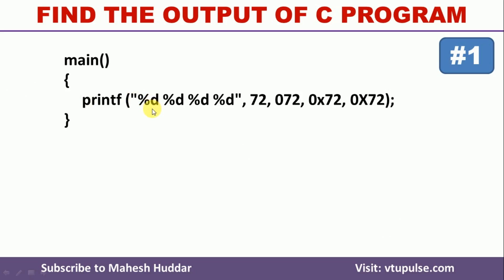This is program number one. In this program, we are trying to display the values of four integer constants. In C programming language, the integer constants are represented with three number systems: decimal, octal, and hexadecimal.